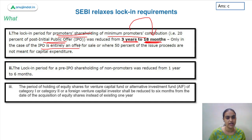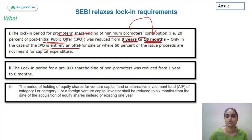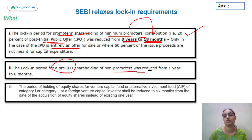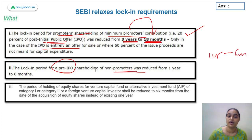This 18-month lock-in applies only in those cases where the IPO is entirely for an offer for sale, or where 50 percent of the issue is not being used for capital expenditure. In those cases, the lock-in period change is applicable. Additionally, the lock-in period for pre-IPO shareholding of non-promoters was reduced from one year to six months.